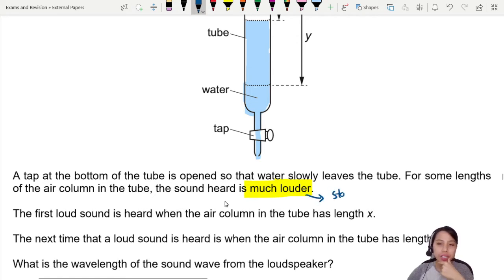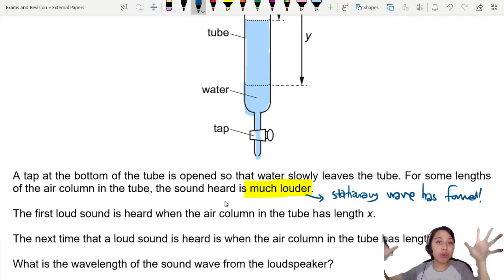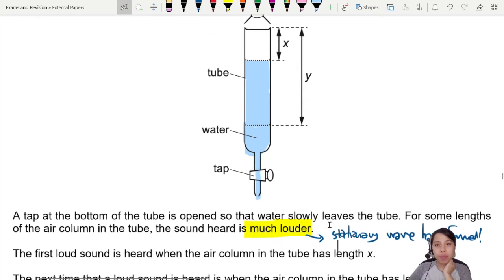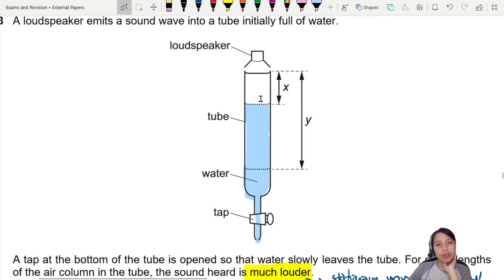That's what we mean by loud sound. The first loud sound is heard when the air column has length x. So you can consider your water level is at x, means already got some kind of wave that looks like this already formed there. This is how a stationary wave looks.